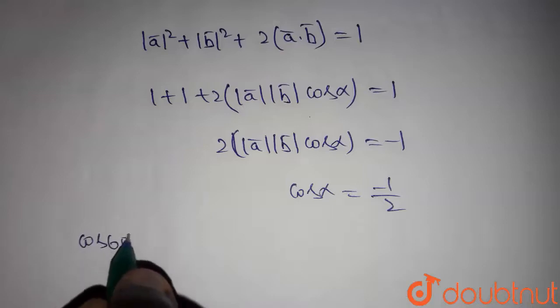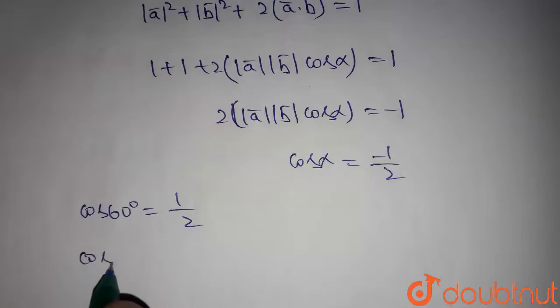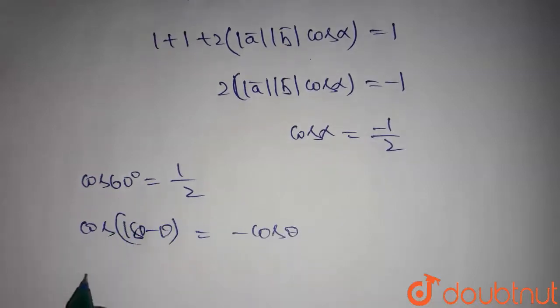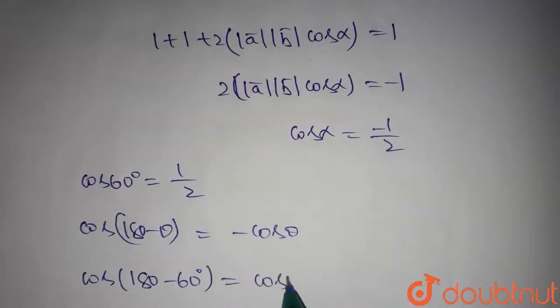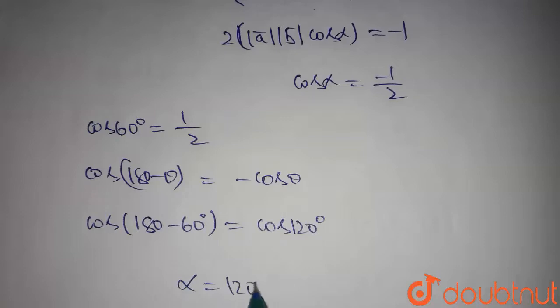We know that cos 60 degrees equals one by two, and cos 180 minus theta equals minus cos theta. So by using these two values, we get cos 180 minus 60 equals cos 120. So the value of alpha is 120 degrees.